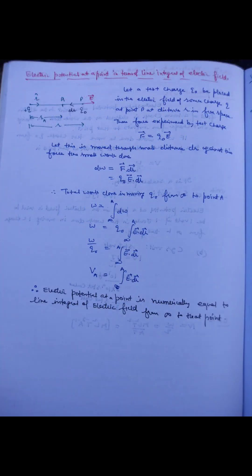Electrostatic potential at a point in the electric field of a source charge is defined as the work done in moving a unit charge from infinity to that point. It is a scalar quantity having unit joule per coulomb, with dimensions M¹L²T⁻³A⁻¹.